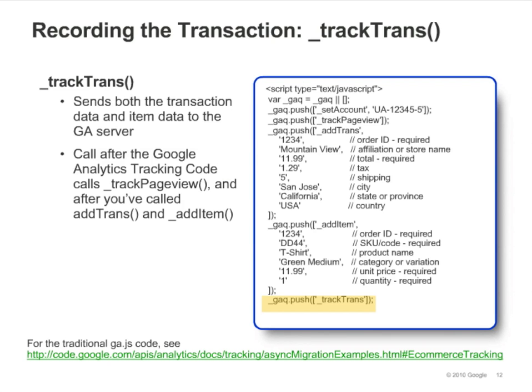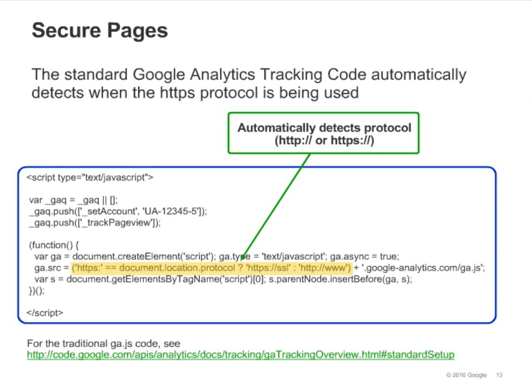Finally, after the calls to AddTrans and AddItem, you'll need to call TrackTrans to send the transaction information to Google Analytics. Remember that all of the eCommerce code must appear after the Google Analytics tracking code calls TrackPageView. Generally, you'll be placing eCommerce tracking code on a secure shopping cart page. The standard Google Analytics tracking code automatically detects when an HTTPS protocol is being used, so you won't need to add any special tracking code for secure pages.